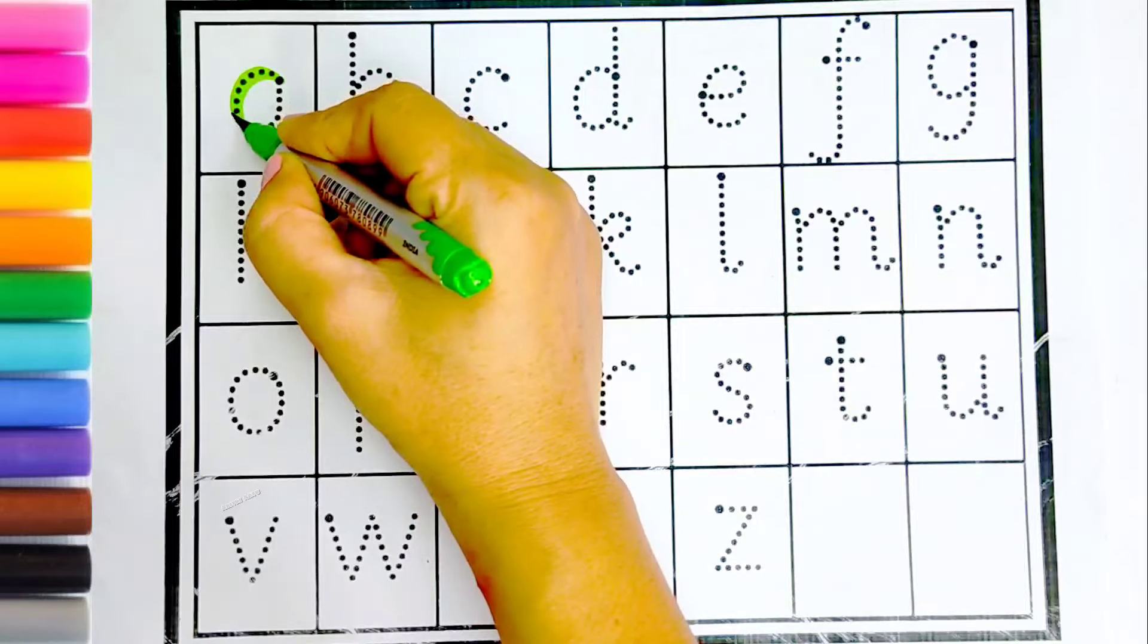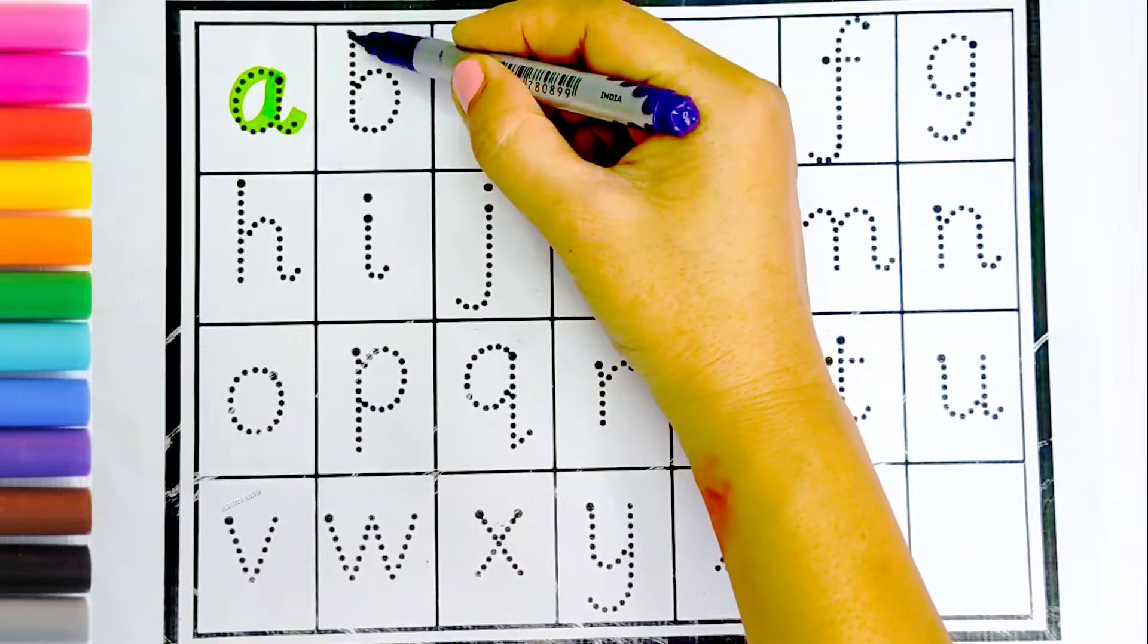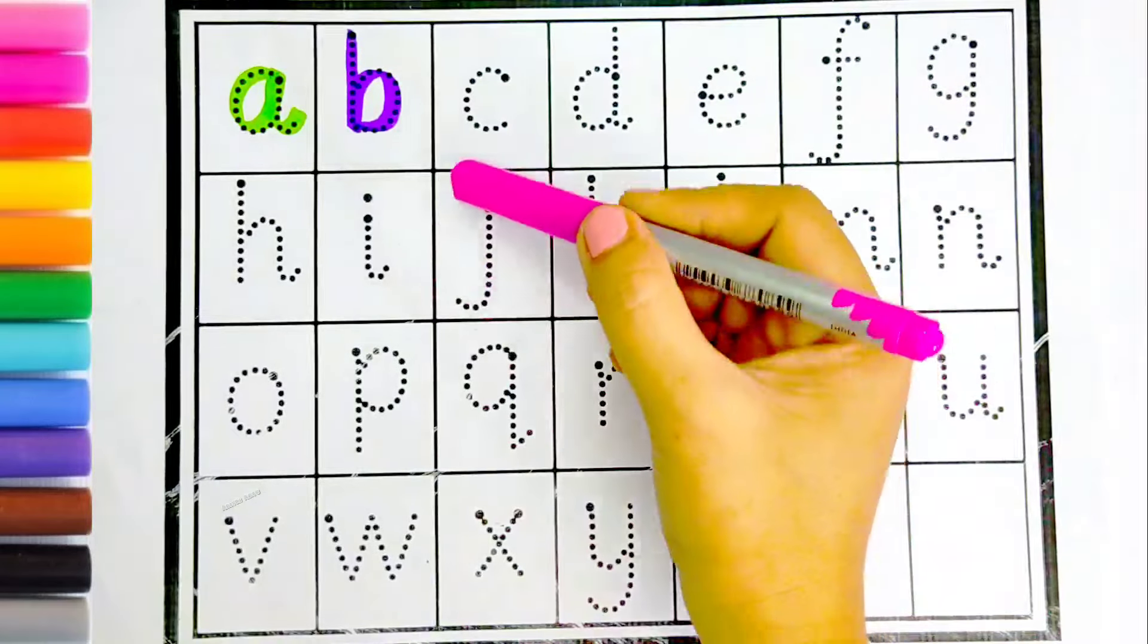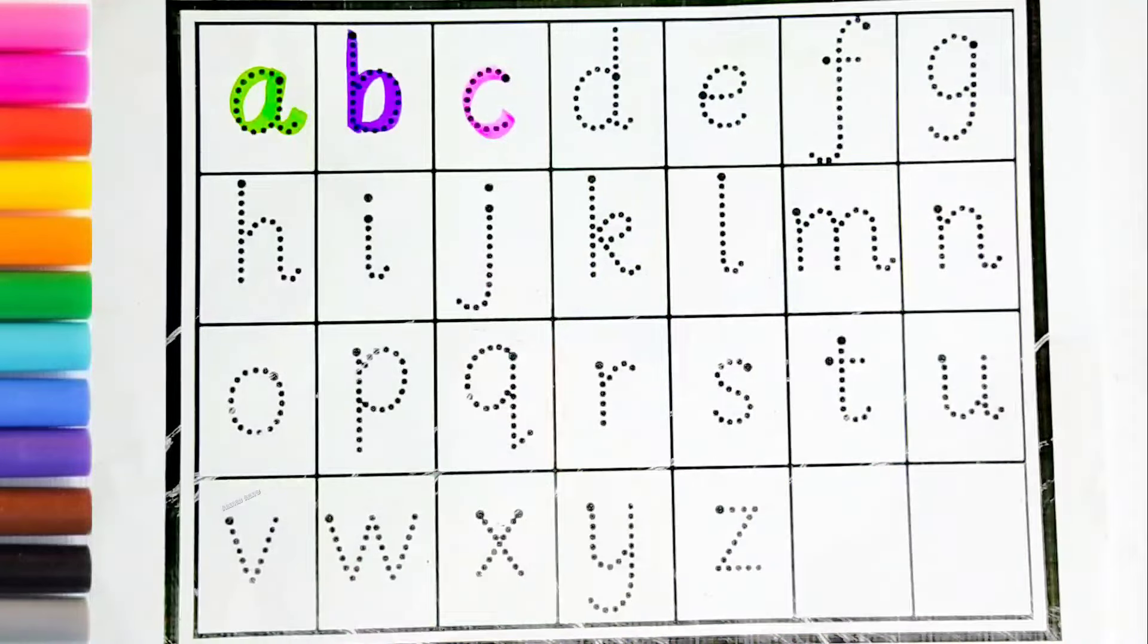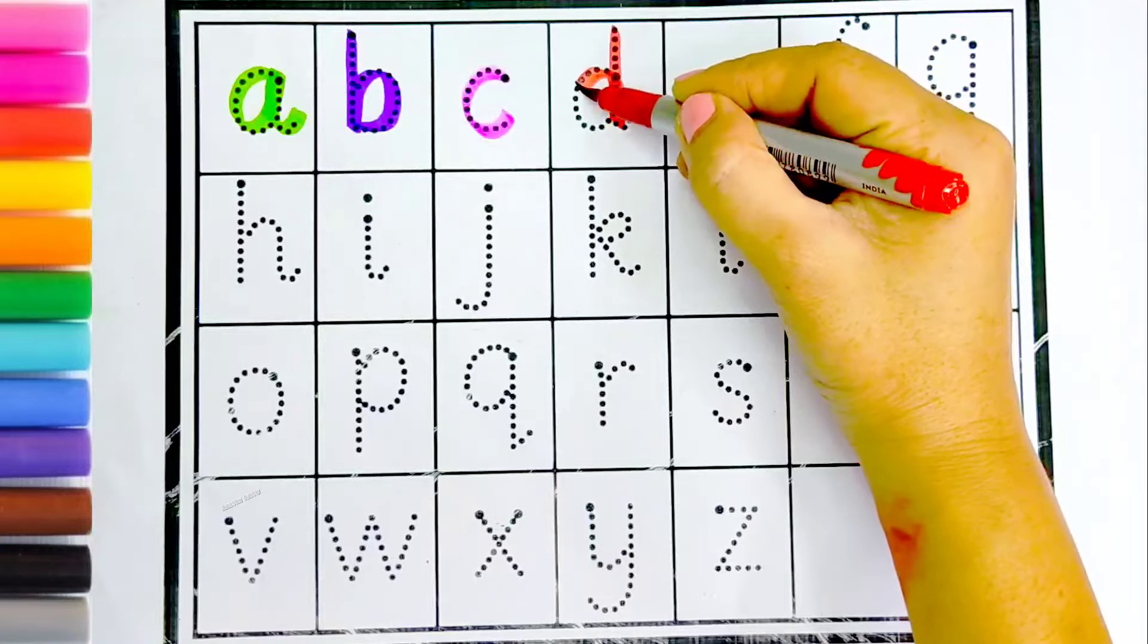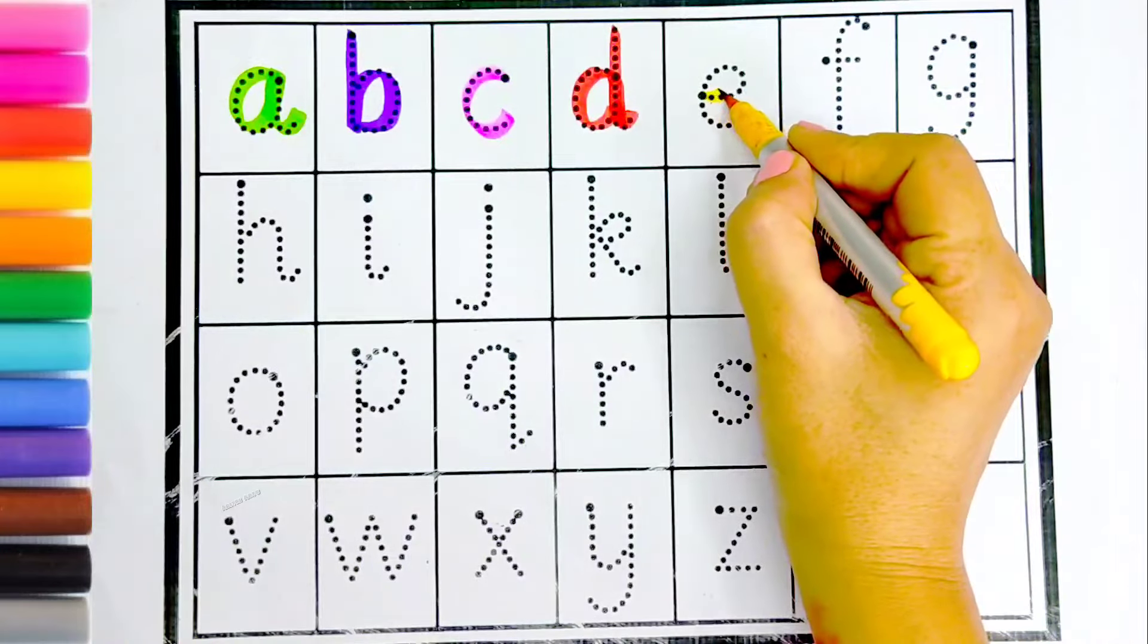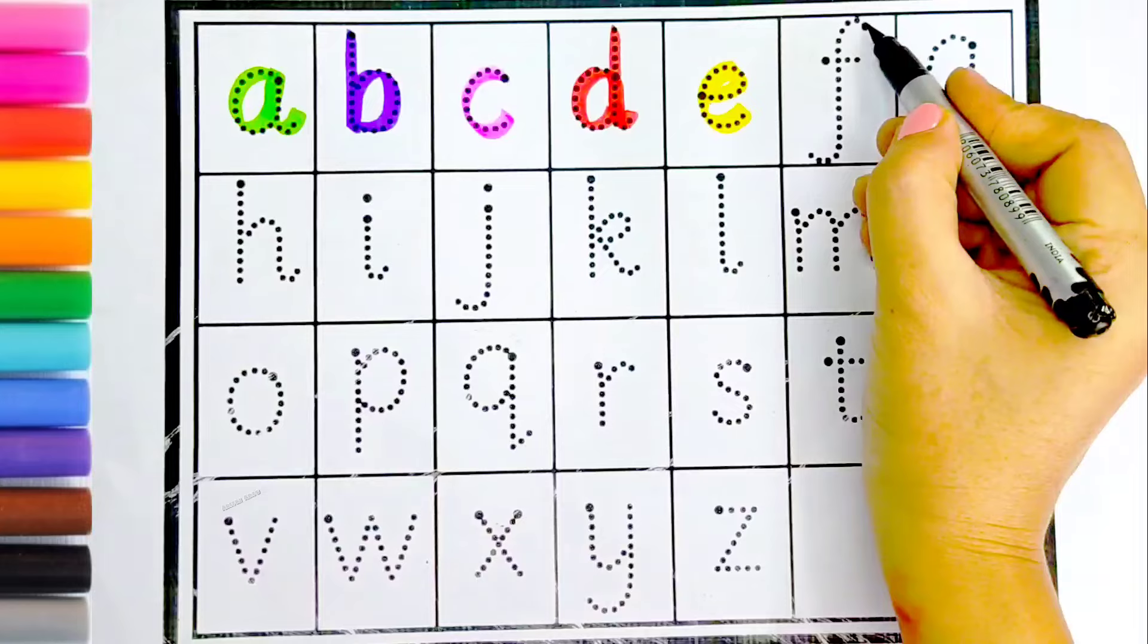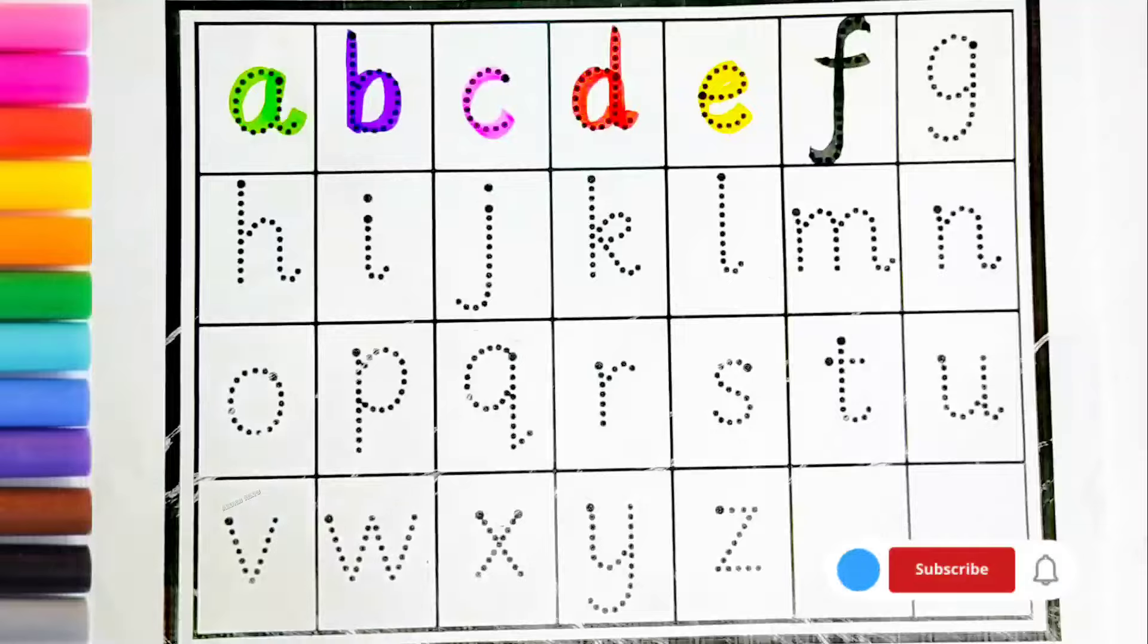A, A for apple, purple color. B, B for ball, pink color. C, C for cat, red color. D, D for dog, yellow color. E, E for elephant, black color. F, F for fish, blue color.